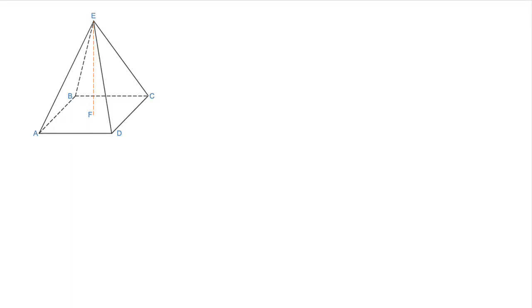In this example of using Pythagoras in three dimensions, we have a square-based pyramid. We're asked to find the length of ED. The square on the base has sides of 4 centimeters, and the height of the pyramid is 6 centimeters.